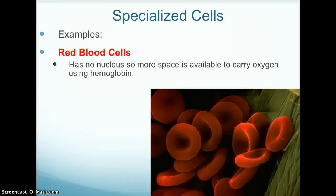Examples of specialized cells include red blood cells. Red blood cells have no nucleus, so more space is available to carry oxygen using hemoglobin.